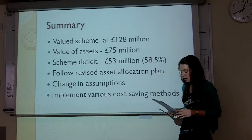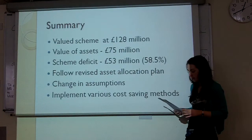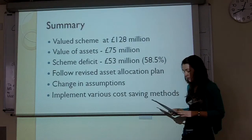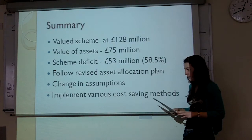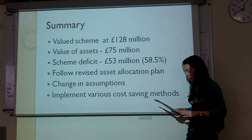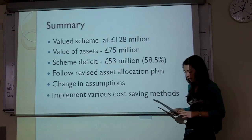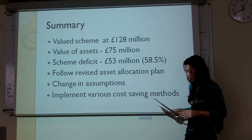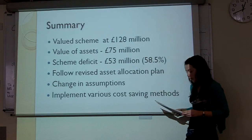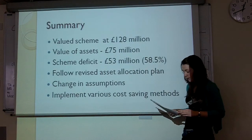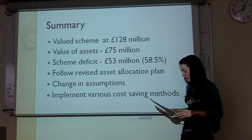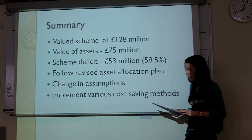To sum up, we have valued the XYZ pension scheme at £128 million, and at that point we have assets at £75 million. This leaves an alarming deficit of £53 million, which accounts for only 58.5% of our scheme funding level. With the asset allocation that we have suggested and changes in assumptions of interest rates and inflation rate, we can see that these have a large impact on our liabilities. In addition to reducing our liabilities, we have suggested cost saving methods such as changing the accrual rate and retirement age.